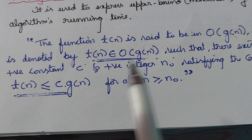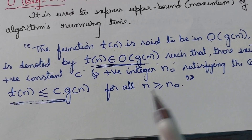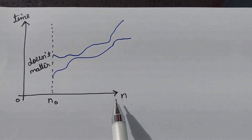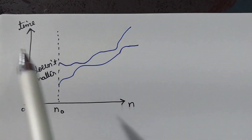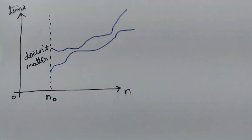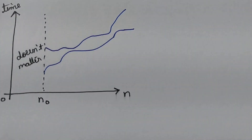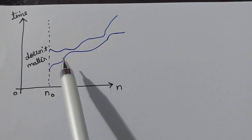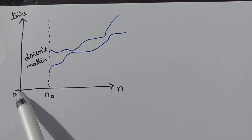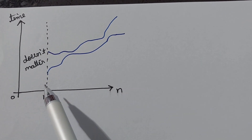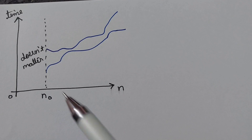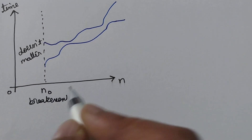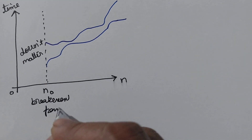Now we will write this in graph form. The x-axis indicates the problem size n and the y-axis indicates the time complexity t(n). Up to a dotted mark, we have not drawn any graph — we need to start from a certain point rather than the origin. That certain point is called the break-even point.